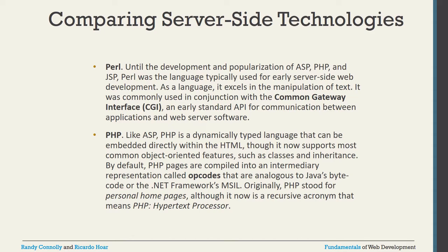Next one is PHP. PHP is a dynamically typed language that can be directly embedded within HTML. You can use HTML inside PHP and PHP inside HTML — both ways. It now supports most common object-oriented features: classes, inheritance, and all of these things. PHP pages are compiled into an intermediate representation called opcodes, which are analogous to Java bytecode or the .NET framework's MSIL. PHP originally stood for Personal Homepage, but generally we say it is the Preprocessor Hypertext Markup Language.